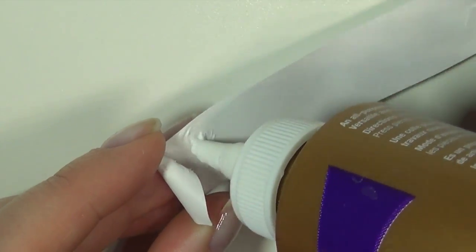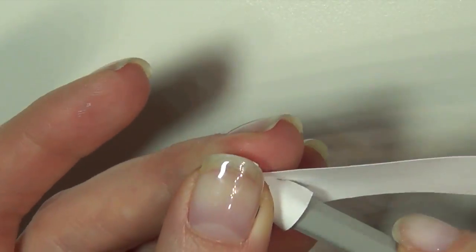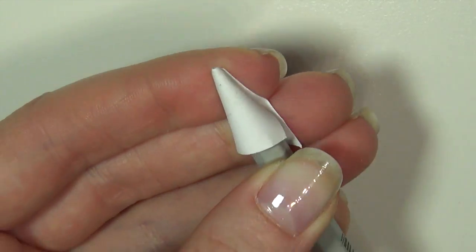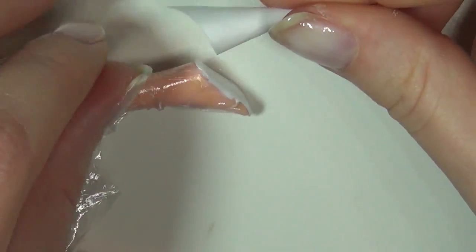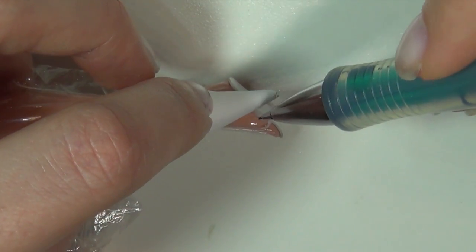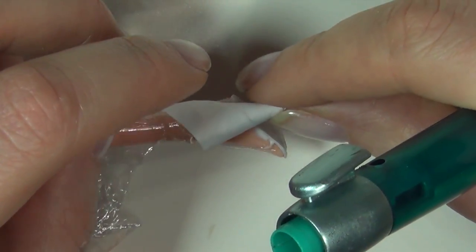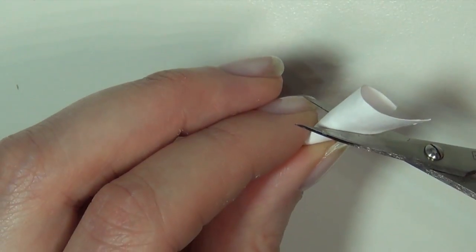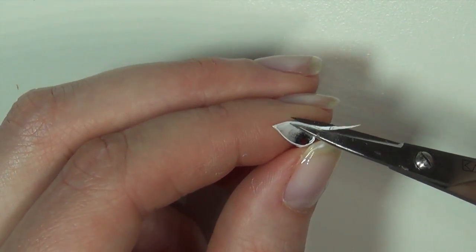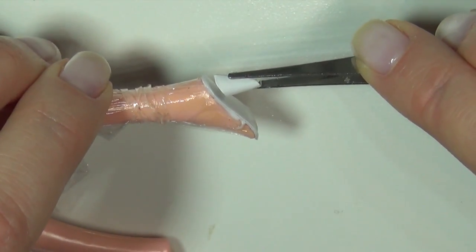Fix it with glue and cut away the excess. Now hold the cone up to the shoe base and see the curve of the foot so you can sketch out where you need to cut it to make it fit.